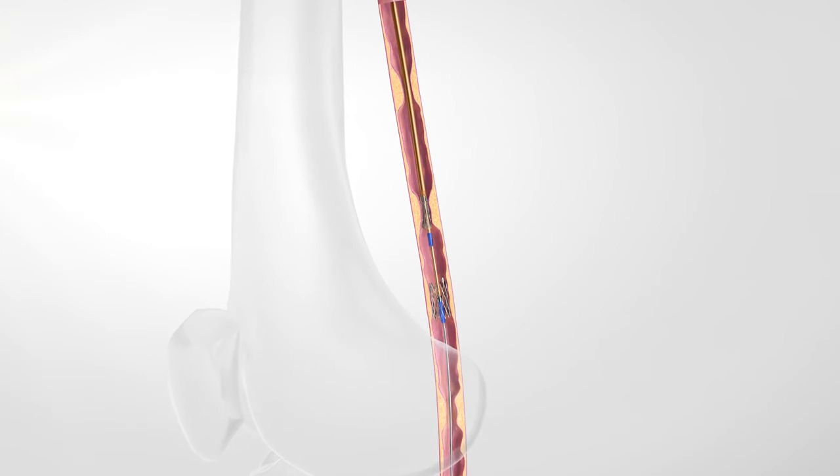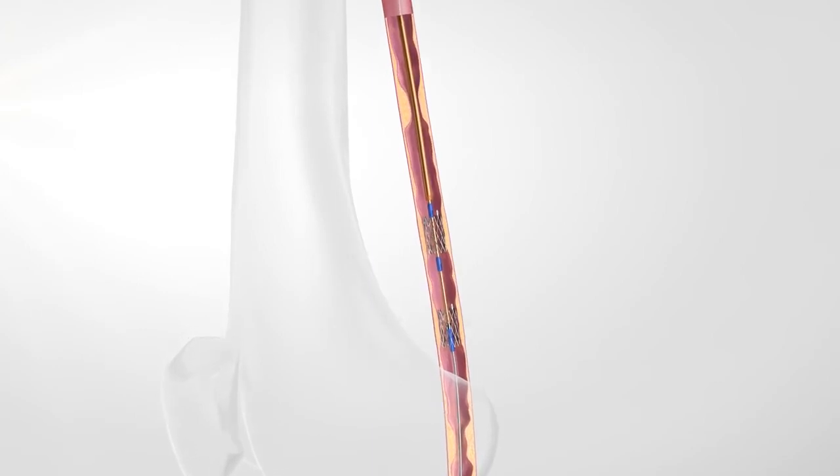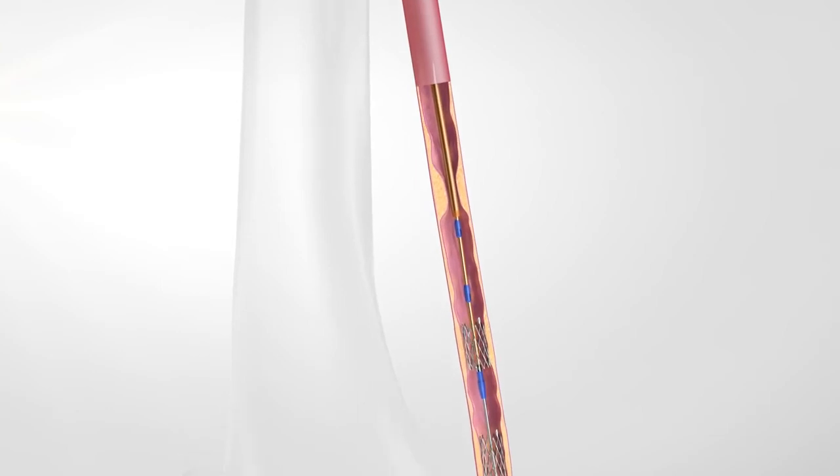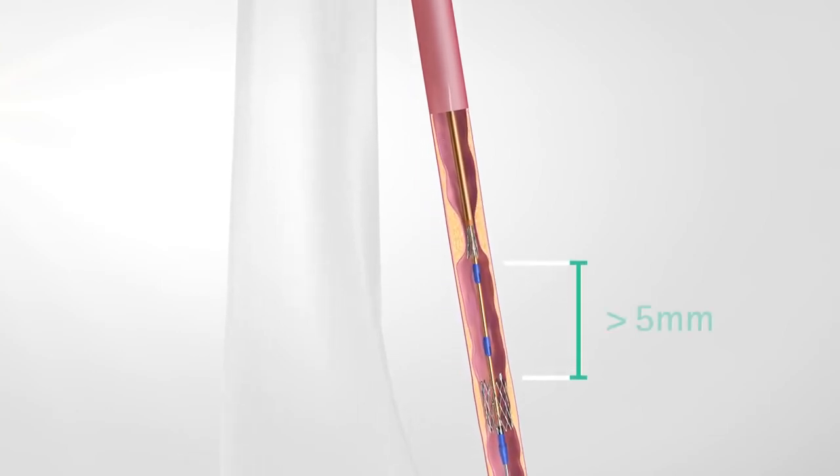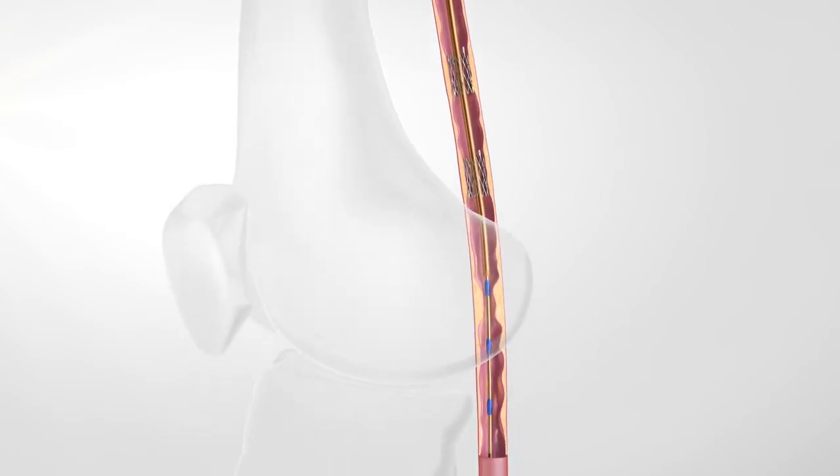Each stent can be implanted only where its scaffolding properties are needed. A distance of at least five millimeters between neighboring stents is recommended. Already implanted stents can be passed to release additional stents distal of the previously treated lesion.